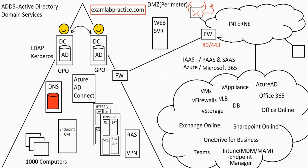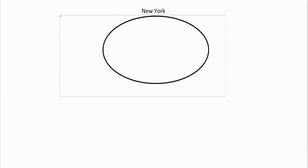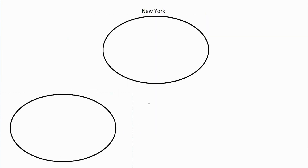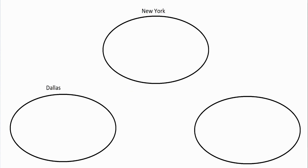To help explain that, let's look at a diagram with different office locations. Our main location might be in New York City, then maybe another location in Dallas, Texas, and also another location in Birmingham, Alabama.